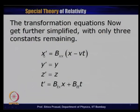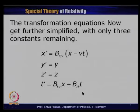The same argument cannot be applied along the x direction because in x there is both time and x dependence. The x direction is unique because it is determined by the direction of the relative velocity. So the equations become simpler with only three unknowns: x' = bxx(x − vt), y' = y, z' = z, and t' = btx·x + btt·t. These three unknowns bxx, btx, and btt still need to be determined using the postulates of special relativity.